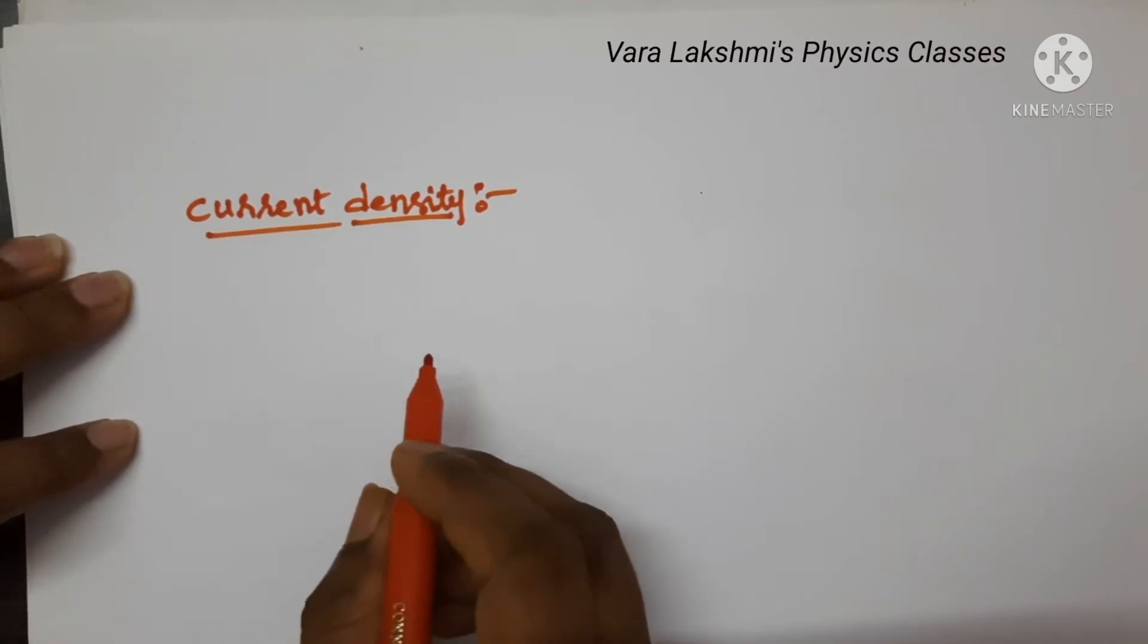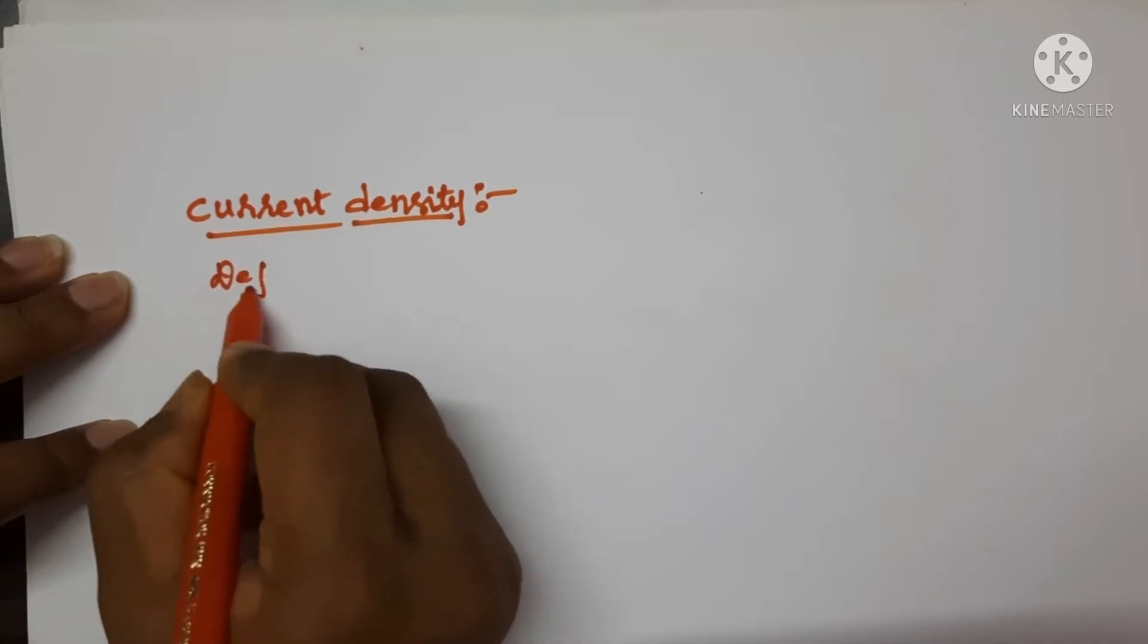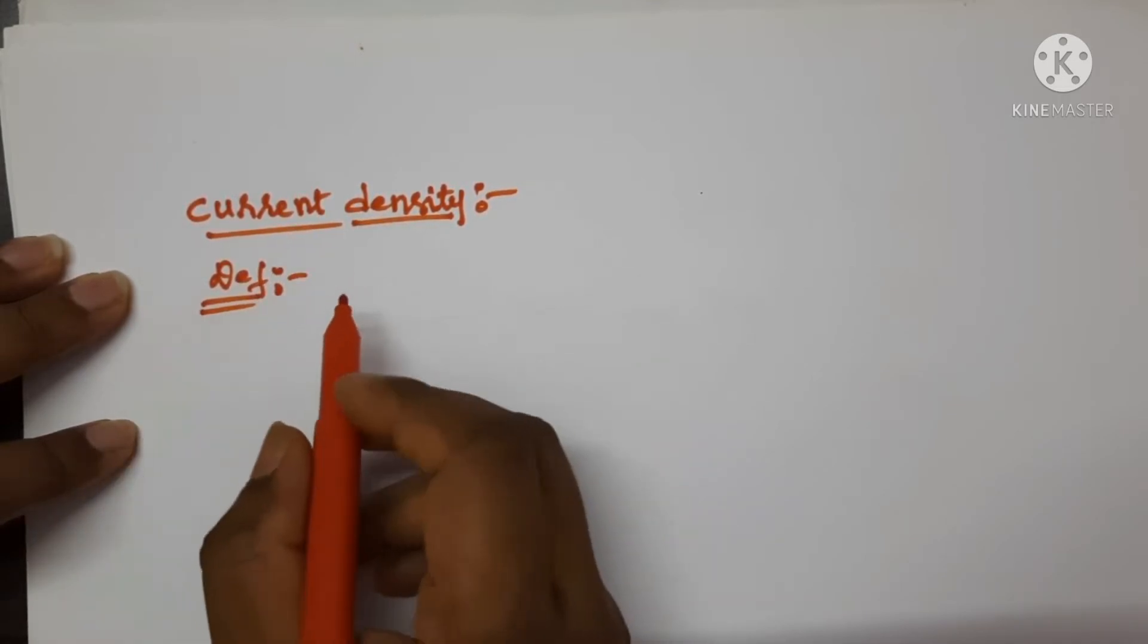Let us see the dimensional formula of current density. For that, first let us see the definition of current density.